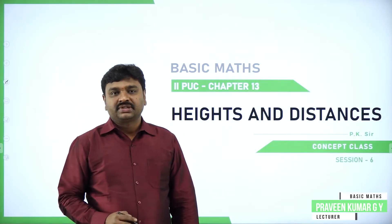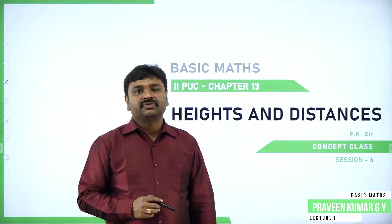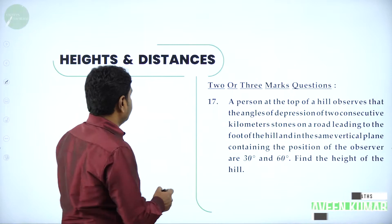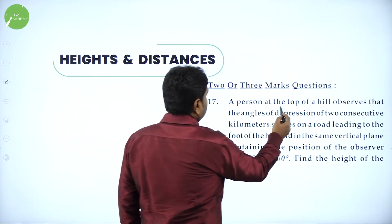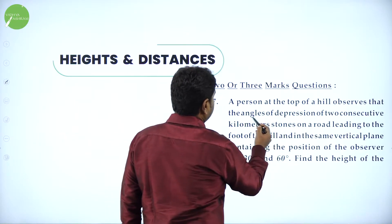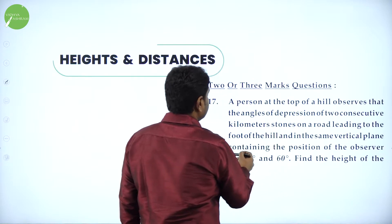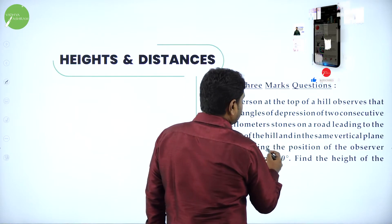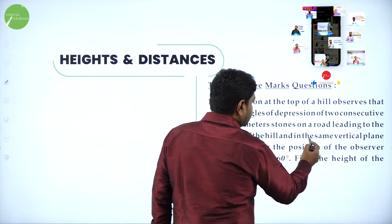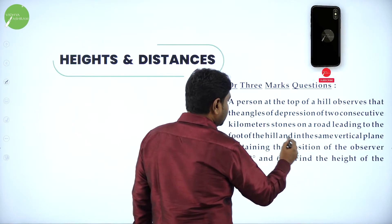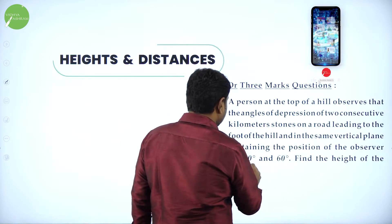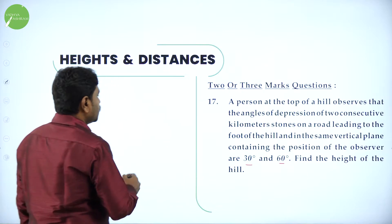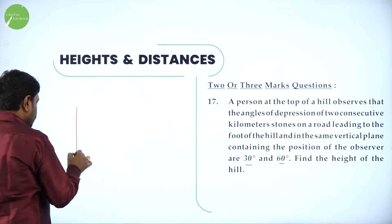Welcome to the session dear students. Today we will go ahead with the problems of heights and distances. A person at the top of a hill observes that the angle of depression of two consecutive kilometer stones on a road to the foot of the hill, in the same vertical plane containing the position of observer, are 30 degrees and 60 degrees. Find the height of the hill.